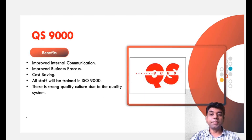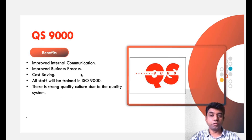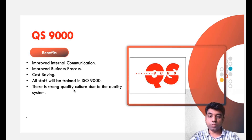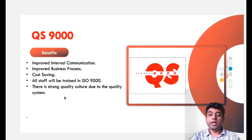Coming to the benefits of QS 9000: it improves internal communication, it improves the business process, it saves costs for the industry, all staff will get trained, and there is a strong quality culture due to the quality system.